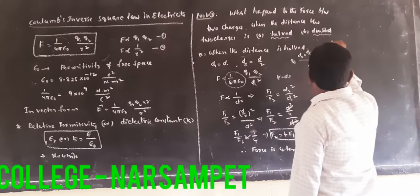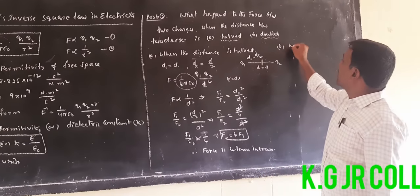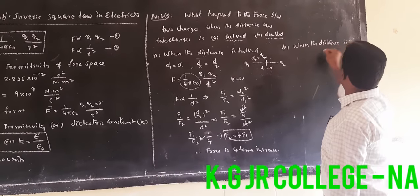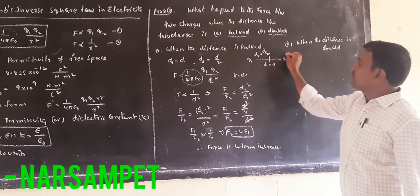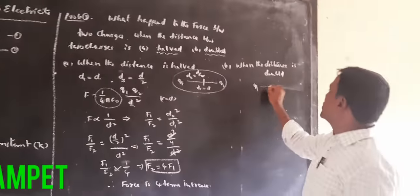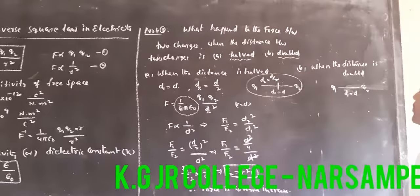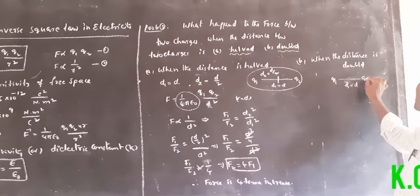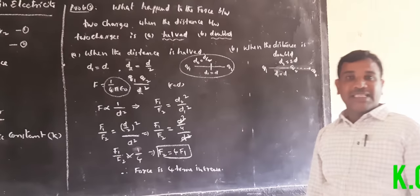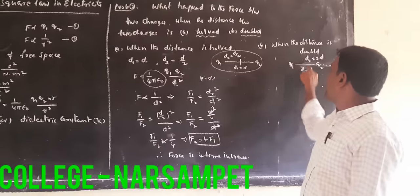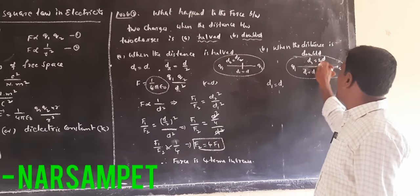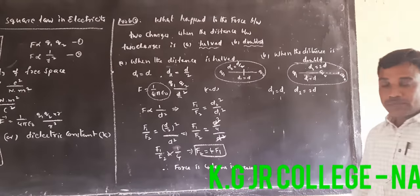For the second statement, part B: when the distance is doubled. Again, we have charges Q1 and Q2. The initial distance D1 is equal to D. Since the distance is doubled, D2 is equal to 2D.